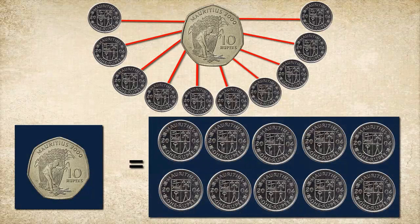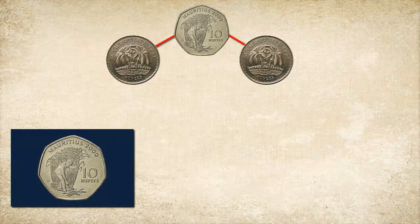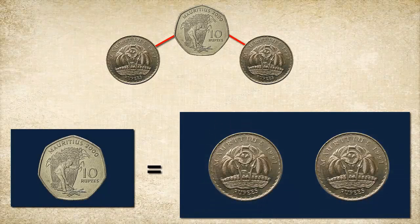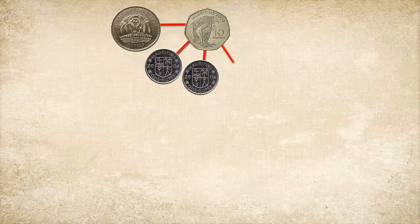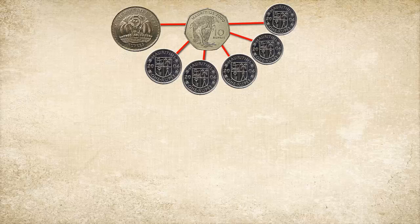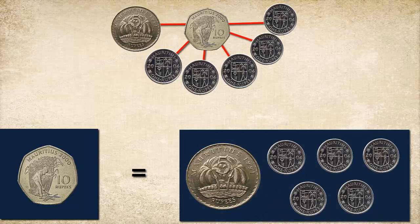One ten-rupee coin is equal to ten one-rupee coins. One ten-rupee coin is equal to two five-rupee coins. One ten-rupee coin is equal to one five-rupee coin and five one-rupee coins.